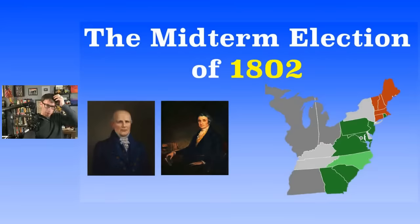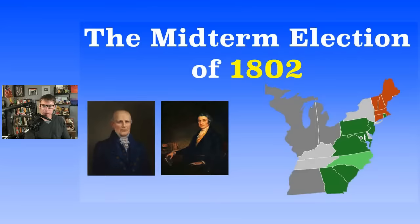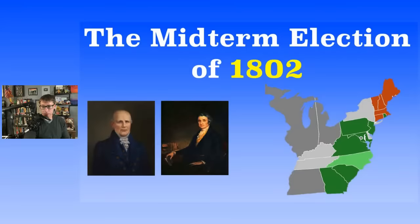By 1802, the Democratic-Republicans were taking charge. In the Senate, there were 32 seats; 17 were needed for a majority. The Democratic-Republicans had barely 17 before — a slim majority. They gained five in this election, getting a clear majority now. The Federalists lost six seats.